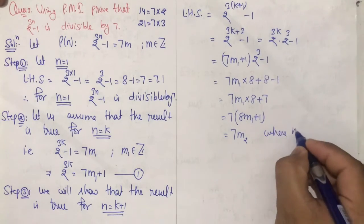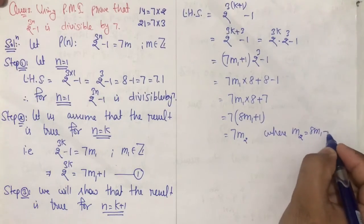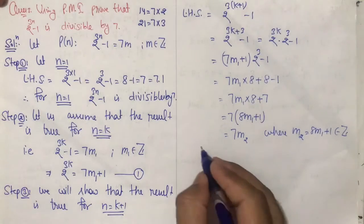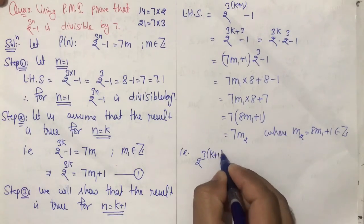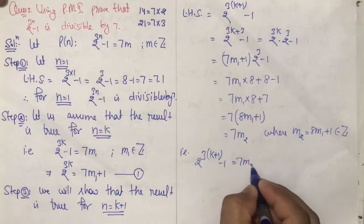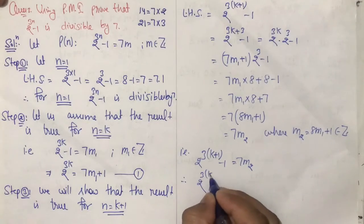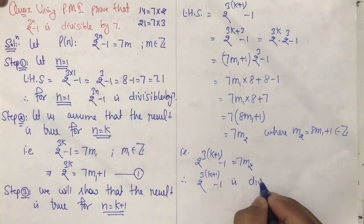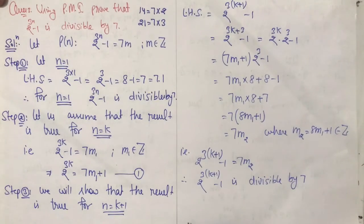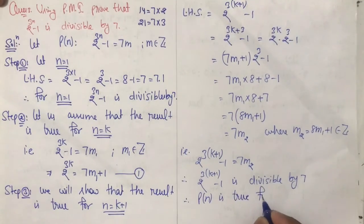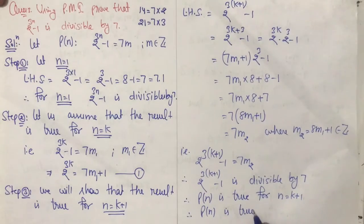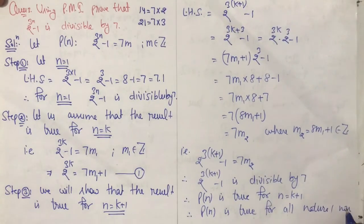Which is equal to 7 into m2, where m2 is equal to 8 into m1 plus 1, belongs to the set of integers. That is 2 raised to power 3 into (k plus 1) minus 1 is equal to 7 into m2. Therefore 2 raised to power 3(k+1) minus 1 is divisible by 7. Therefore P(n) is true for n equals to k plus 1. Therefore P(n) is true for all natural numbers. Hence proved.